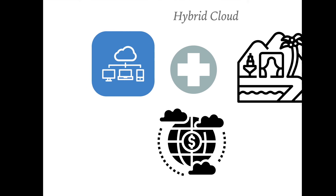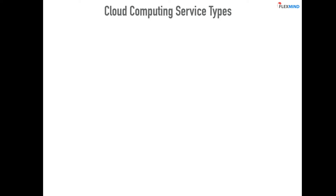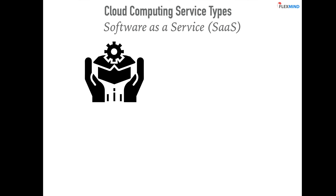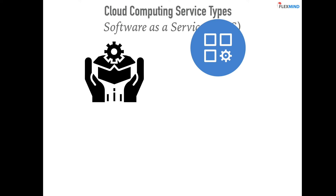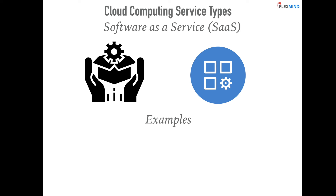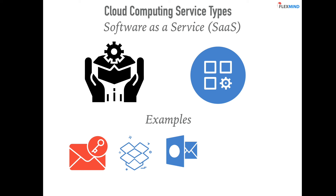Now let's look at different types of cloud computing service models or delivery models. There are three common ones: Software as a Service (SaaS), Platform as a Service (PaaS), and Infrastructure as a Service (IaaS). Starting with SaaS — it's the most abstract level, where the consumer does not manage or control the underlying components like hardware, networks, storage, or servers, and has only limited access to application configuration settings. Examples include Gmail, Dropbox, Outlook, Zoho, WordPress, Quora, Pinterest, and Instagram.